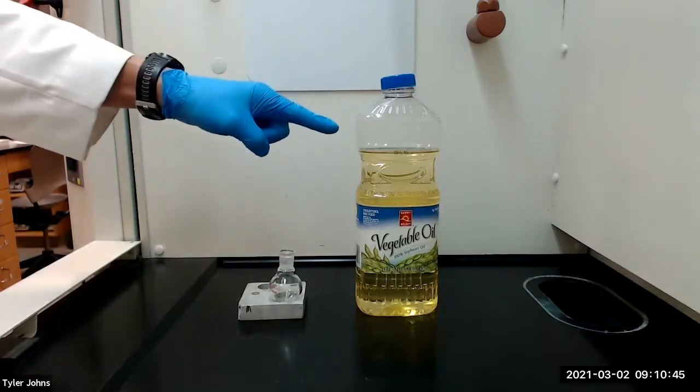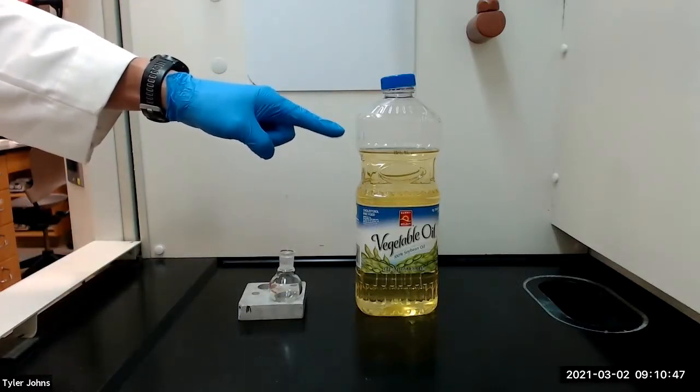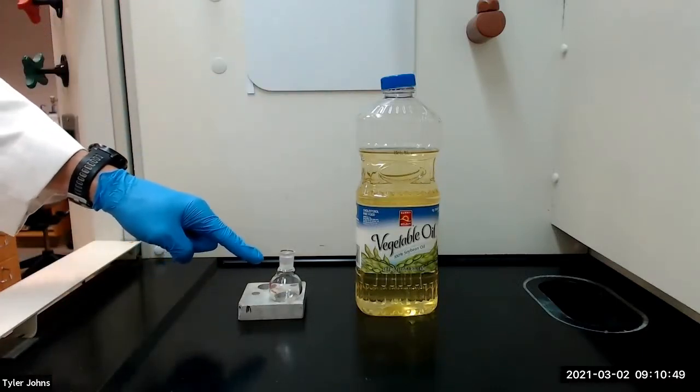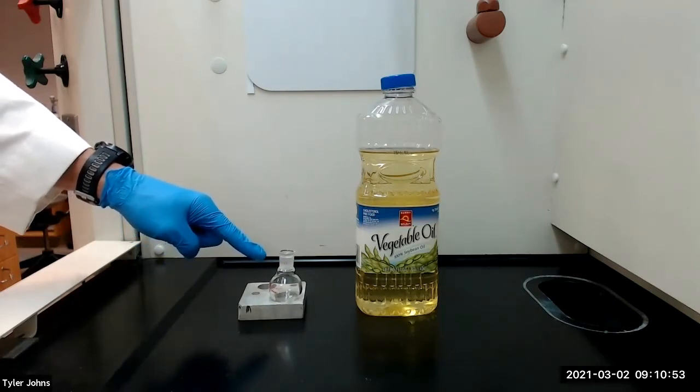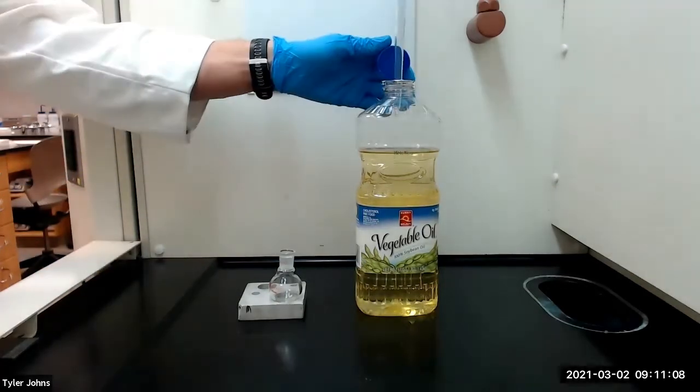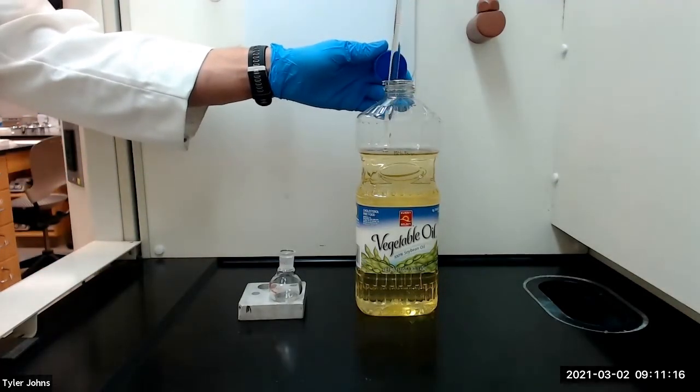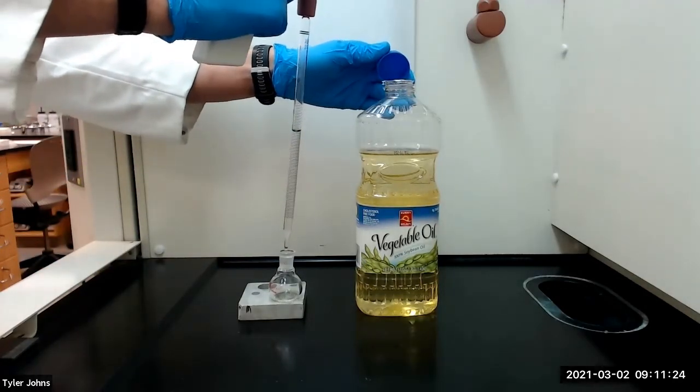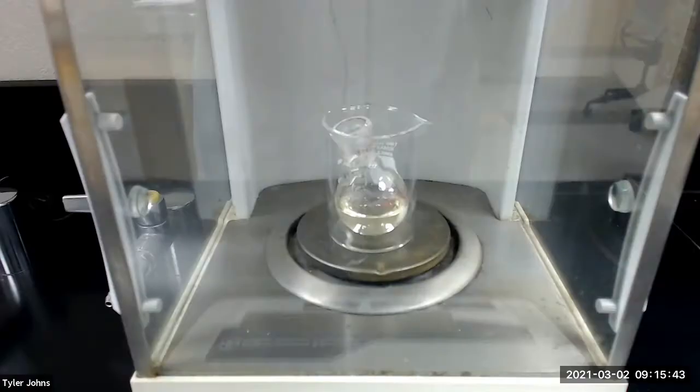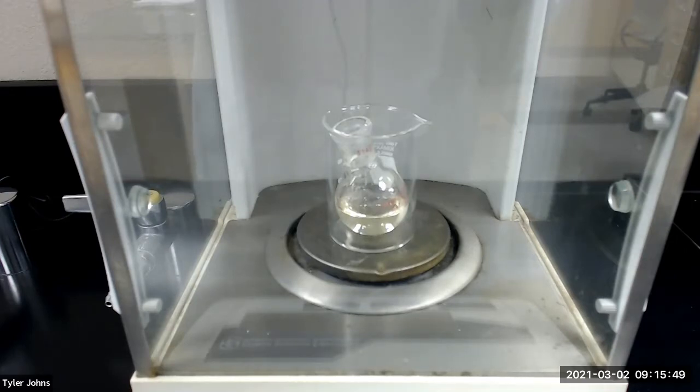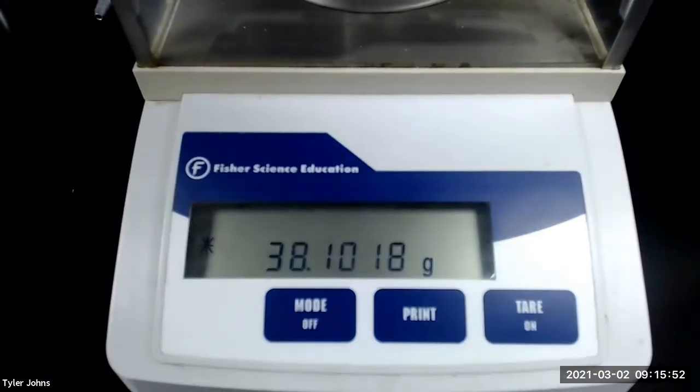We next need to add 10 milliliters of vegetable oil to the pre-weighed 25 milliliter round bottom flask and then re-weigh the flask plus the oil to get the weight of the oil. The mass of the pre-weighed 25 milliliter round bottom flask plus the vegetable oil is 38.1018 grams.